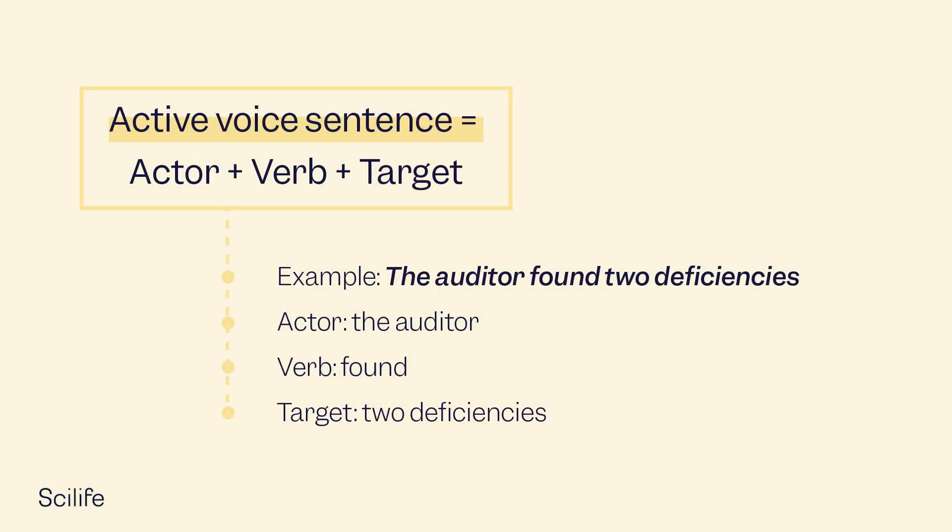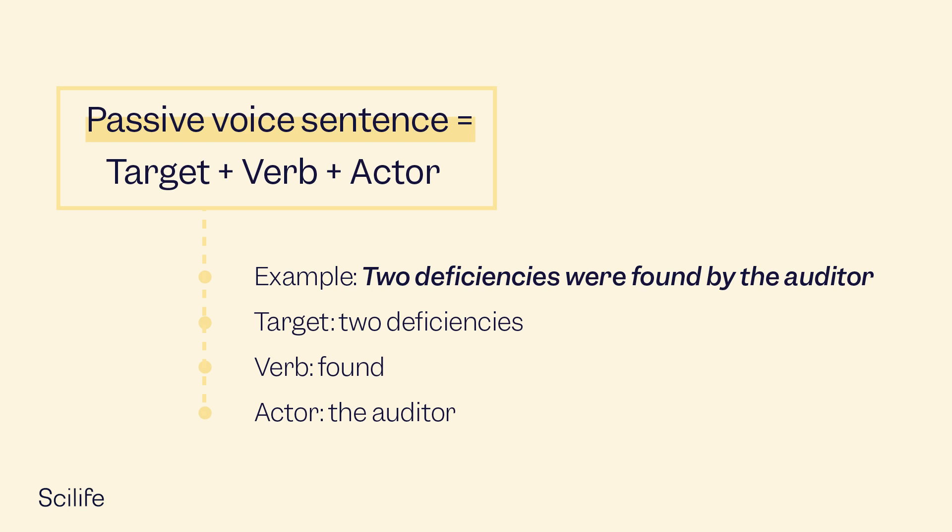In technical writing, the vast majority of sentences should be written in the active voice. It is more concise, direct, and easier for readers to understand. In the active voice, an actor acts on a target. For example, 'The auditor found two deficiencies' — the auditor is the actor and appears at the beginning of the sentence. By contrast, the passive voice reverses the formula: 'Two deficiencies were found by the auditor' — the auditor is the actor but appears at the end. The active voice is used when you need to provide clear, direct instructions, or when describing steps in a procedure or process, like in SOPs, work instructions, guides, and so on.